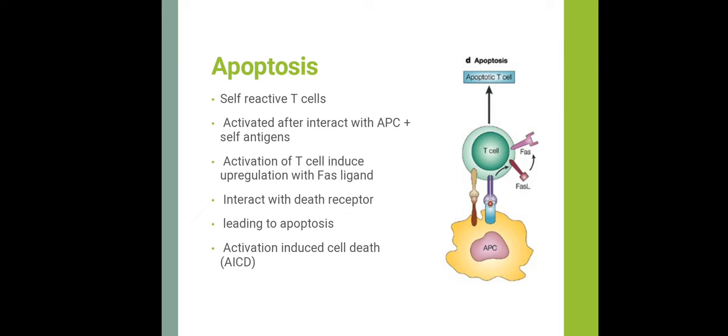In apoptosis-mediated peripheral tolerance, self-reactive T-cells activated after interacting with antigen presenting cells presenting self-antigens undergo upregulation of Fas ligand, which subsequently interacts with the death receptor Fas, leading to apoptosis. This mechanism is called Activation-Induced Cell Death (AICD).